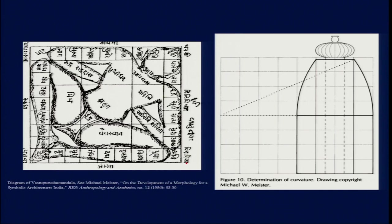If we look at the elevation, there are two important things. One is the axis mundi — this vertical growth that starts from the area dedicated to Brahma. The axis mundi rises from this place and goes up to the top of the temple tower. In all Hindu temples, there is no literal pillar at the centre, but the tower is more like an abstracted or metaphorical axis mundi.